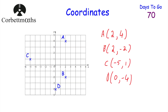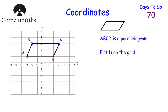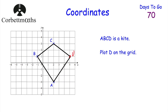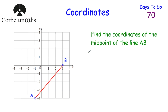We've looked at reading and plotting coordinates and shapes on grids — now let's look at midpoints. Finding the midpoint of a line can be quite nice because you can just see the answer straight away. The question says find the midpoint of line AB. Looking at A and B, you can see the midpoint is the point one, negative two. I can see that because to get from A to M you go two across and two up, and to get from M to B you go two across and two up.